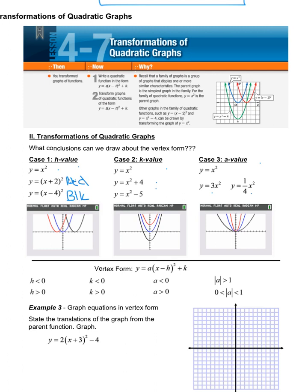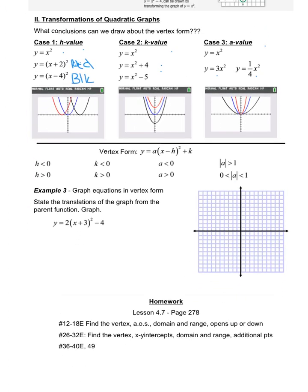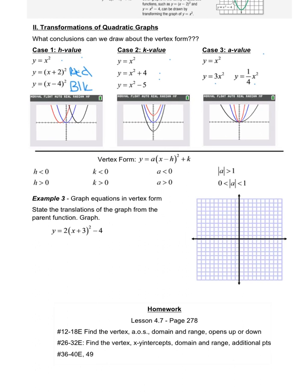So you can draw all these conclusions about the graph based on simply the equation and you don't have to graph anymore. Which is kind of nice. If I was just to ask you not even to graph this problem. I don't want you to graph. I just want you to tell me the translations from the parent function y equals x squared. So how do these two functions differ from each other visually?